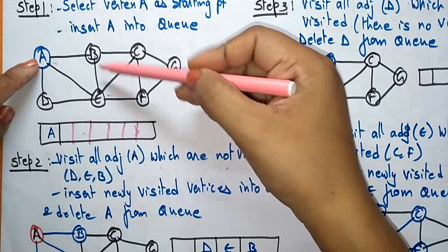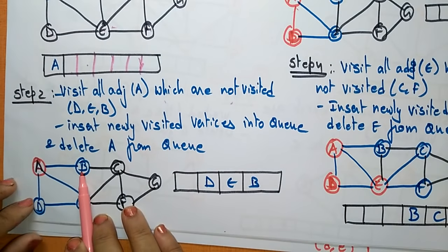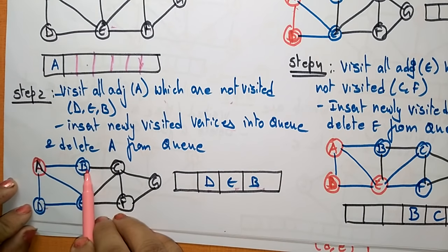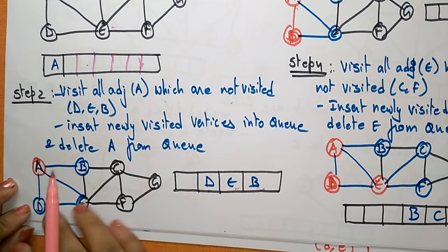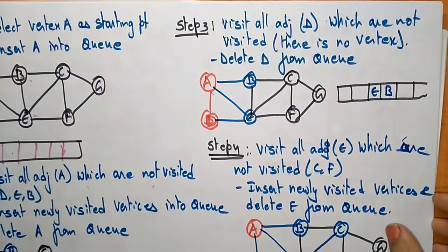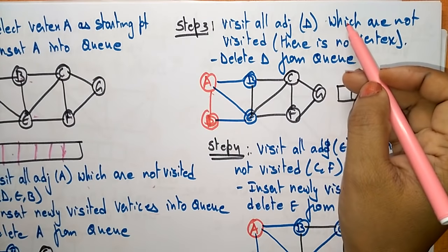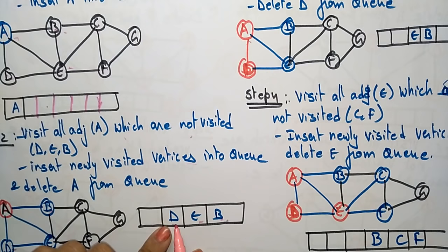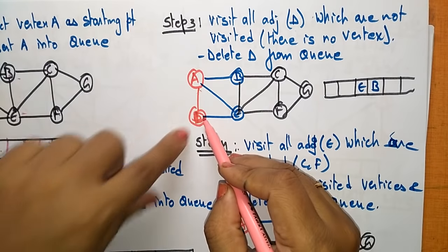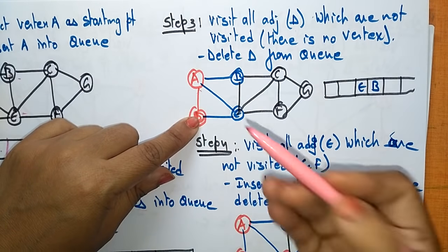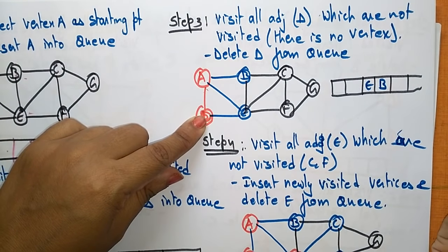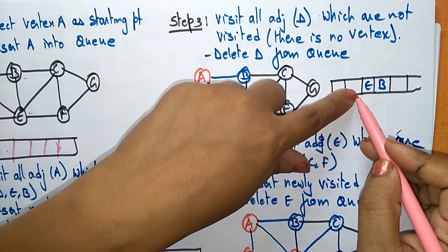Insert the adjacent vertices D, E, and B into the queue, then delete A. Whenever you insert the adjacent vertices, delete A from the queue according to the algorithm. Next, visit all adjacent vertices of D, which is now at the front. From D, only A and E are adjacent, but they are already visited, so delete D from the queue.